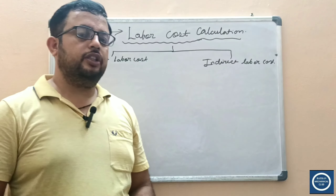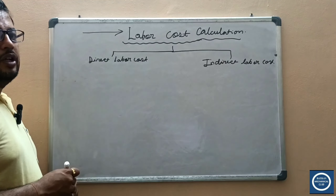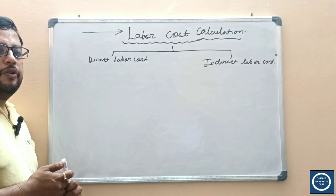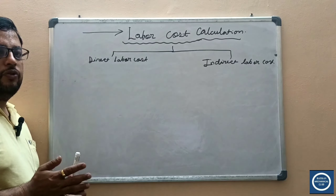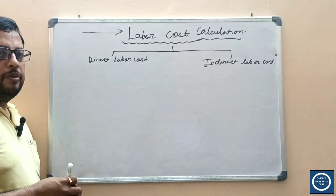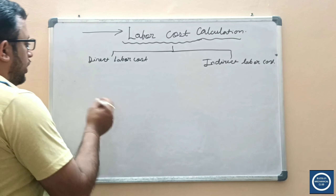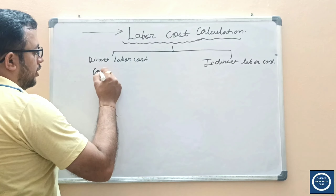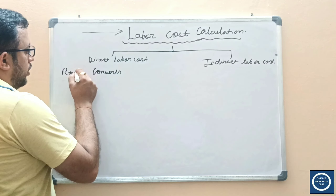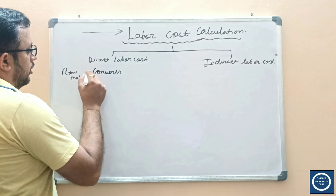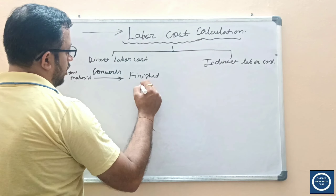So who are direct laborers? Direct laborers are the laborers that perform work on the product to convert it into its final shape. The direct labor cost for a task is the product of direct labor time multiplied by the direct labor rate for that task. Direct labor converts raw material to finished product.